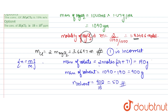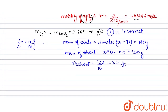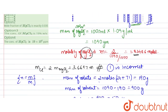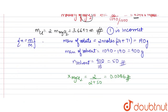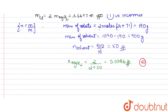Mole fraction of MgCl₂ = moles of MgCl₂ ÷ (moles of MgCl₂ + moles of solvent) = 2 ÷ (2 + 50) = 0.0386. Option 2 states 0.035, which does not match, so Option 2 is also incorrect.